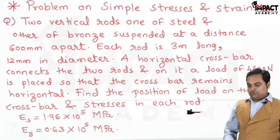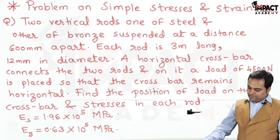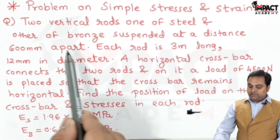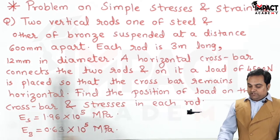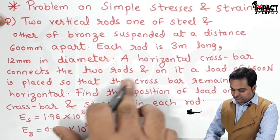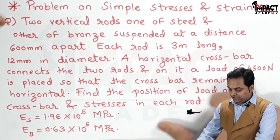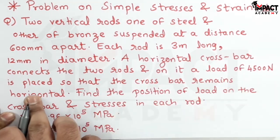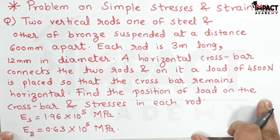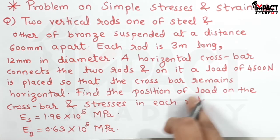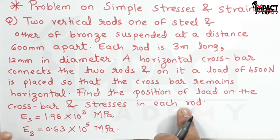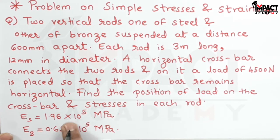Reading the question carefully is quite important. Each rod is 3 meters long and 12 mm in diameter — both steel and bronze rods are equal in length and diameter. A horizontal crossbar connects the two rods and on it a load of 4500 newton is placed so that the crossbar remains horizontal. We have to find the position of the load and the stresses in each rod.